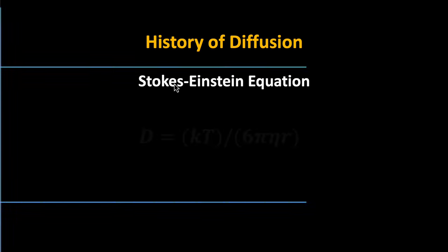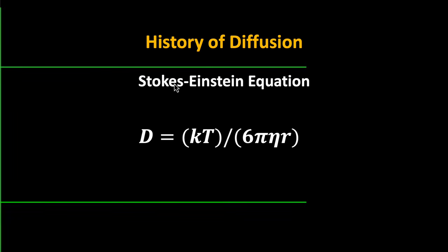To tie these concepts together: this is the Stokes-Einstein equation, calculating the diffusion coefficient D as a function of k (Boltzmann's constant), temperature T, viscosity eta, and R (the spherical radius of particles in the medium). Temperature is in the numerator, so if we increase it, overall diffusion increases. On the bottom, if radius or viscosity increases, diffusion goes down. A very viscous substance like honey — not a lot of diffusion. Something less viscous like water will increase overall diffusion.